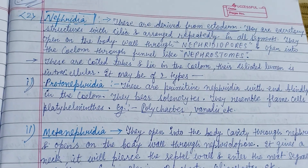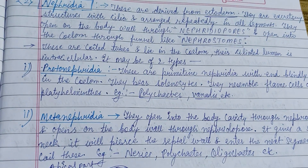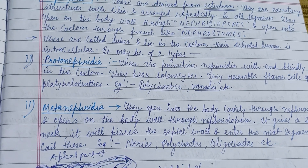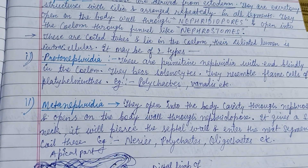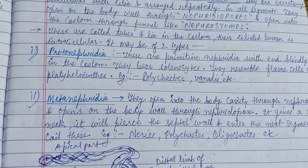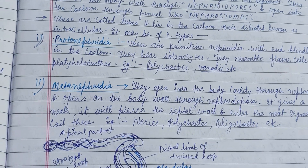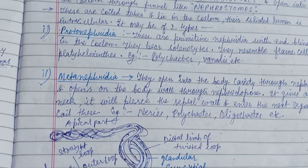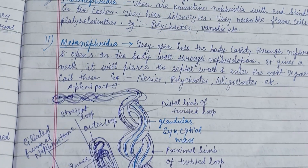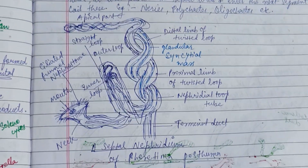Nephridia are the excretory structures with cilia arranged repeatedly in all segments. They open out on the body wall through the nephridial pores and open into the coelom through funnel-like nephrostomes. Nephridia may be protonephridia, metanephridia, and there are many other types.